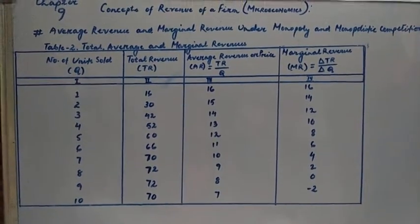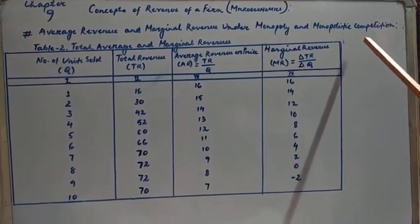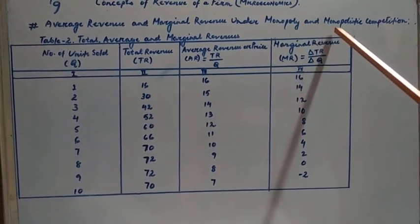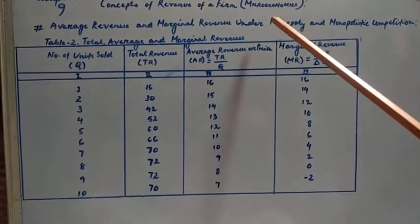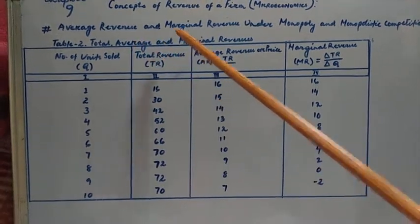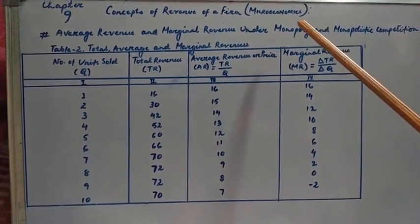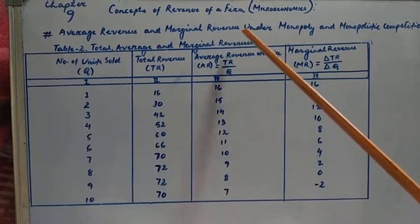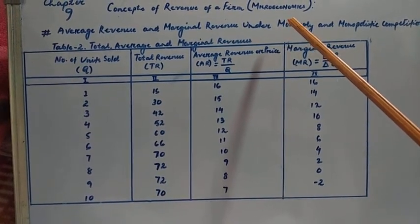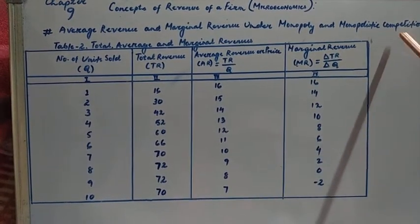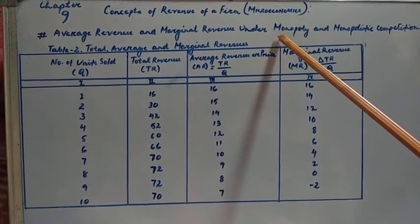Today's topic is average revenue and marginal revenue under monopoly or monopolistic competition. These are forms of imperfect competition. We have already discussed marginal revenue and average revenue under perfect competition, so now we are going to discuss average revenue and marginal revenue under imperfect competition. There are basically three forms of imperfect competition: monopoly, monopolistic competition, and oligopoly.